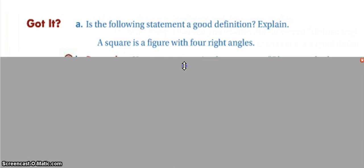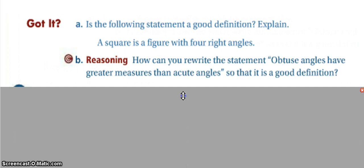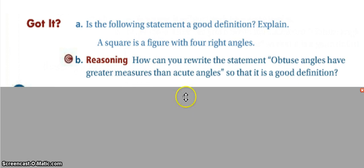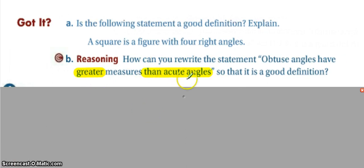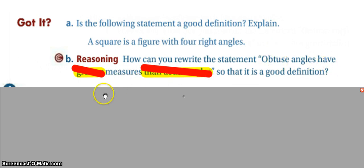For part B, we want to rewrite 'obtuse angles have greater measures than acute angles' into a good definition. The phrase 'greater than acute angles' is not specific enough. We need to replace it with what the measure actually is. We could say: obtuse angles have measures greater than 90 and less than 180, or simply measures between 90 and 180 degrees.